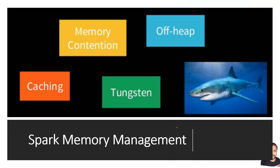The problems we can get into with memory include memory contentions — different tasks or different executors running in parallel, or different jobs altogether running in parallel, maybe fighting for memory resources. Another thing is whether to cache or not to cache — a million dollar question — whether caching in a certain scenario gives you optimization or staggers the entire Spark job.